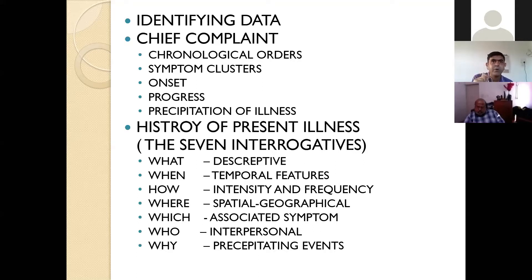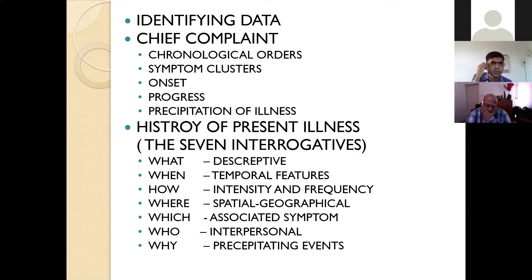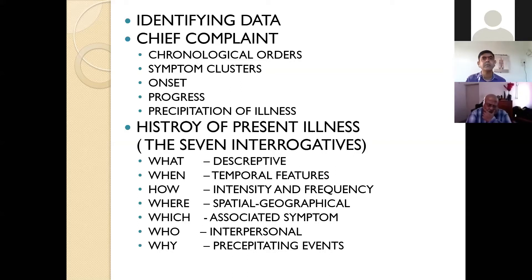An important point: not every case will have a clear stressor — you cannot always identify a causative relation. But preferably in acute onset, try to identify a stressor and note how the illness has progressed — whether static, deteriorating, or improving. These are the points to write in chief complaints. History of present illness is essentially an elaboration of the complaints.